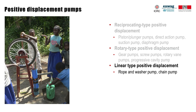A rope pump consists of a hanging rope placed in the well and drawn up through a long pipe with the bottom immersed in water. Round disks or washers matching the diameter of the pipe are attached to the rope, and those pull water to the surface. This type of pump is commonly used in rural areas on hand-dug wells for community or self-supply of water.